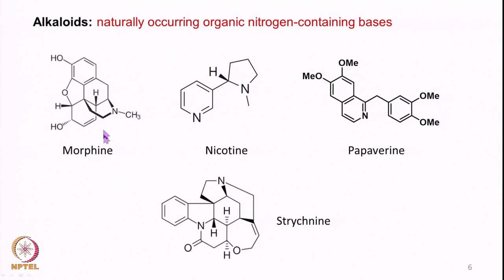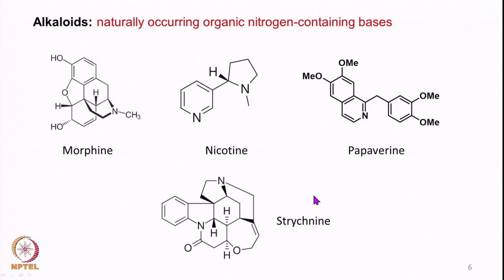Now we look at alkaloids. There are many alkaloids and they are all naturally occurring organic nitrogen-containing bases. For example, morphine has five rings attached to it and a nitrogen. Similarly, nicotine contains two rings — one is a pyridine ring. Then we have papaverine with aromatic structures, and strychnine. These are four types of alkaloids shown here, but there are many more — for example, yohimbine, reserpine, vinblastine, and vincristine — all naturally occurring and biologically important.